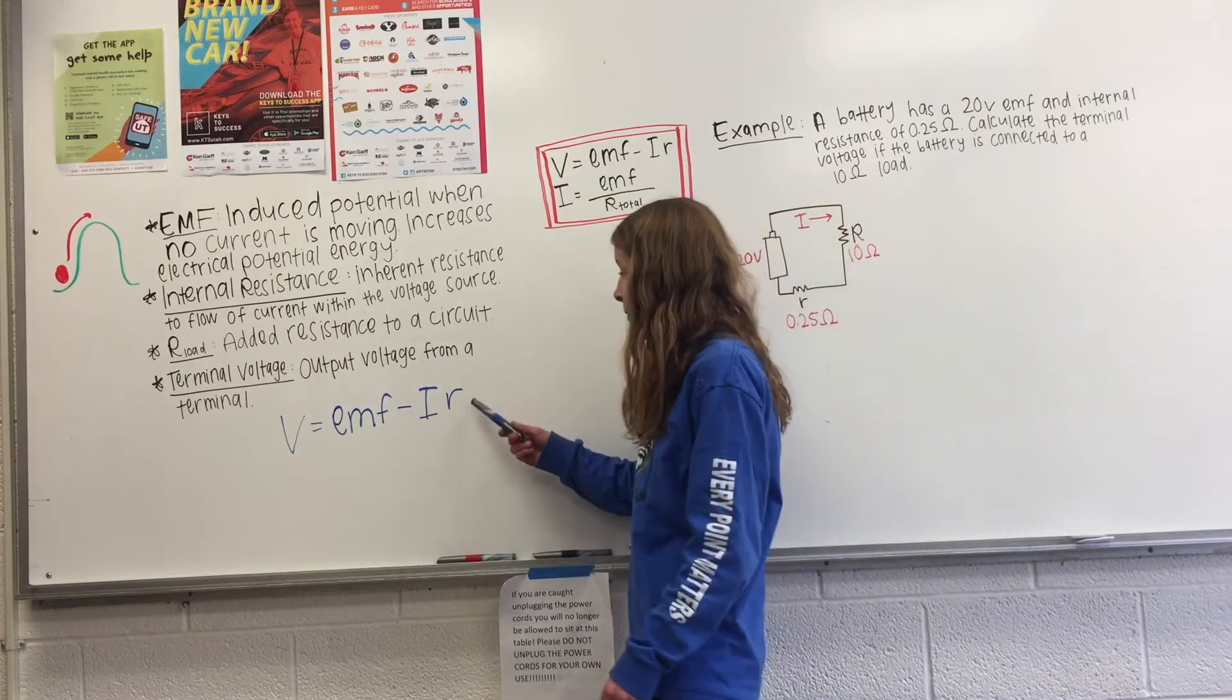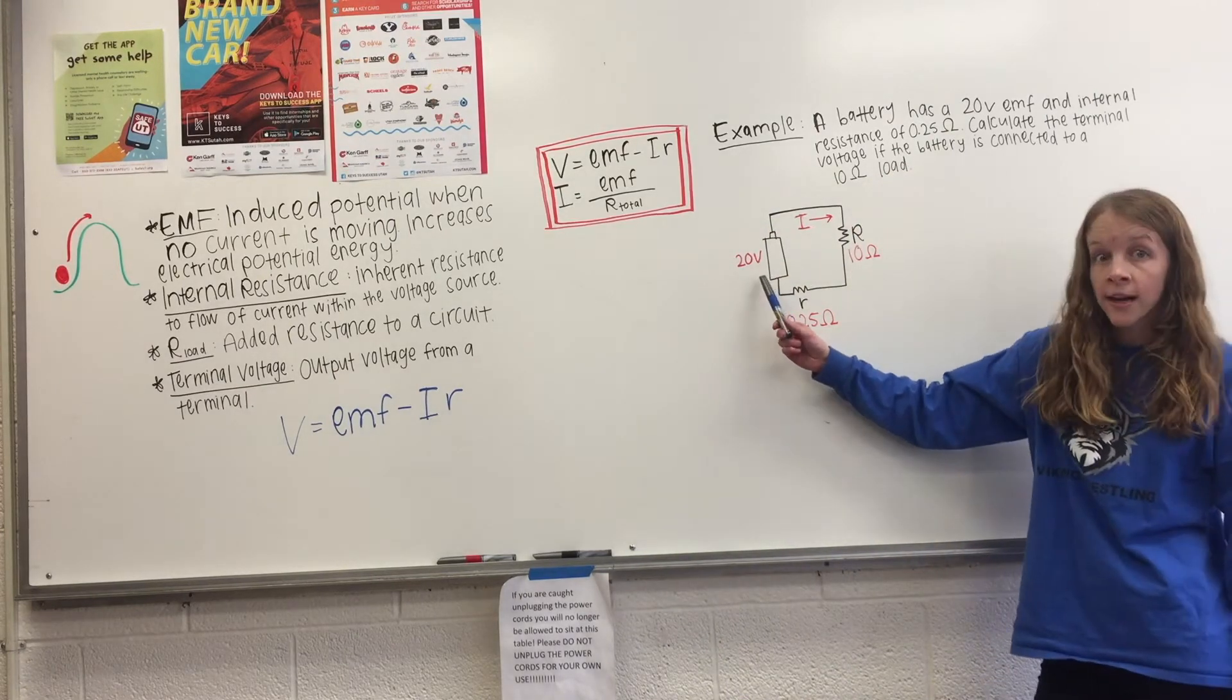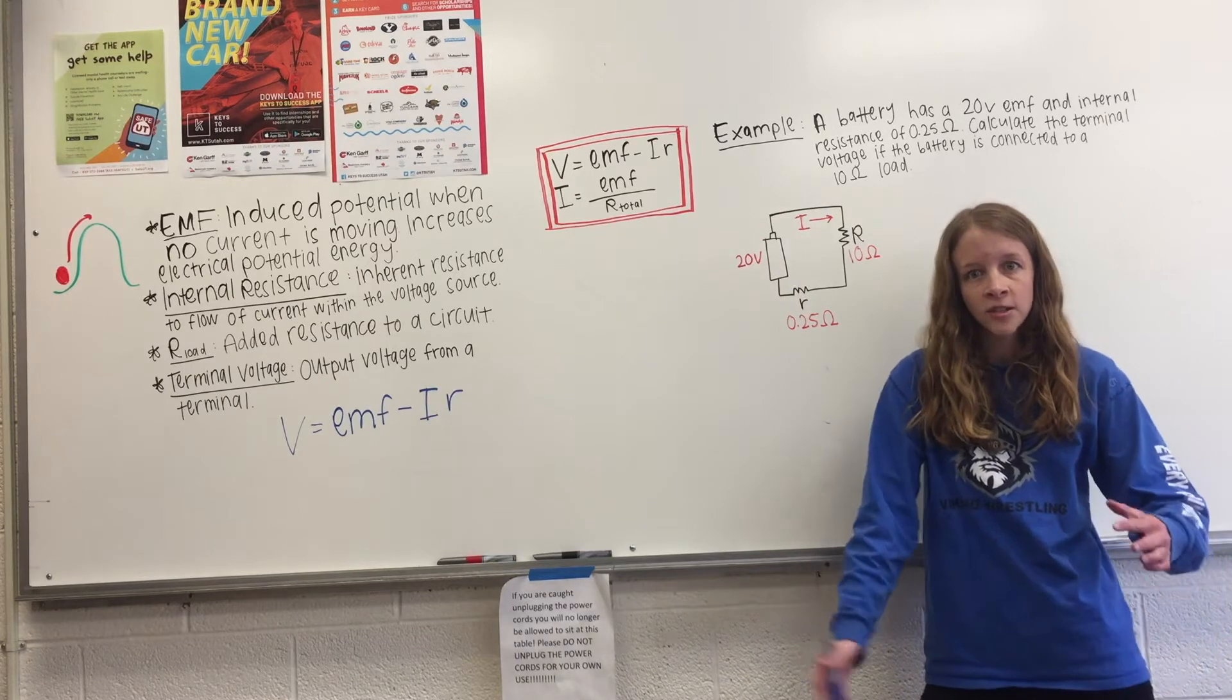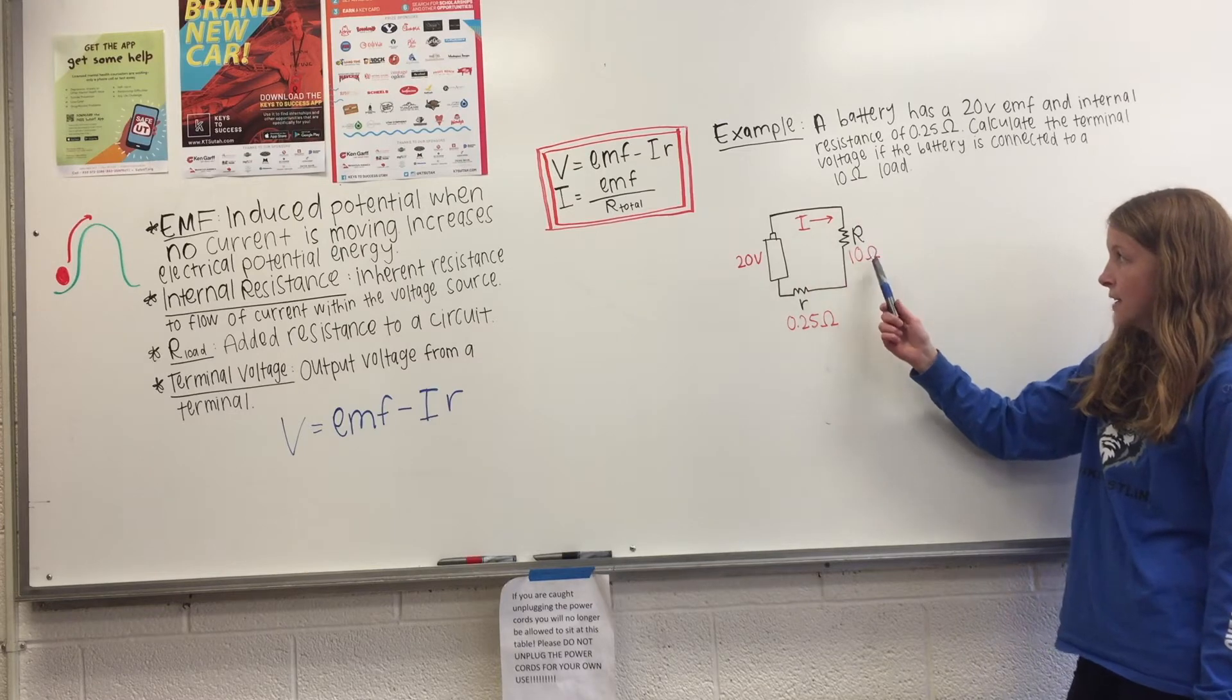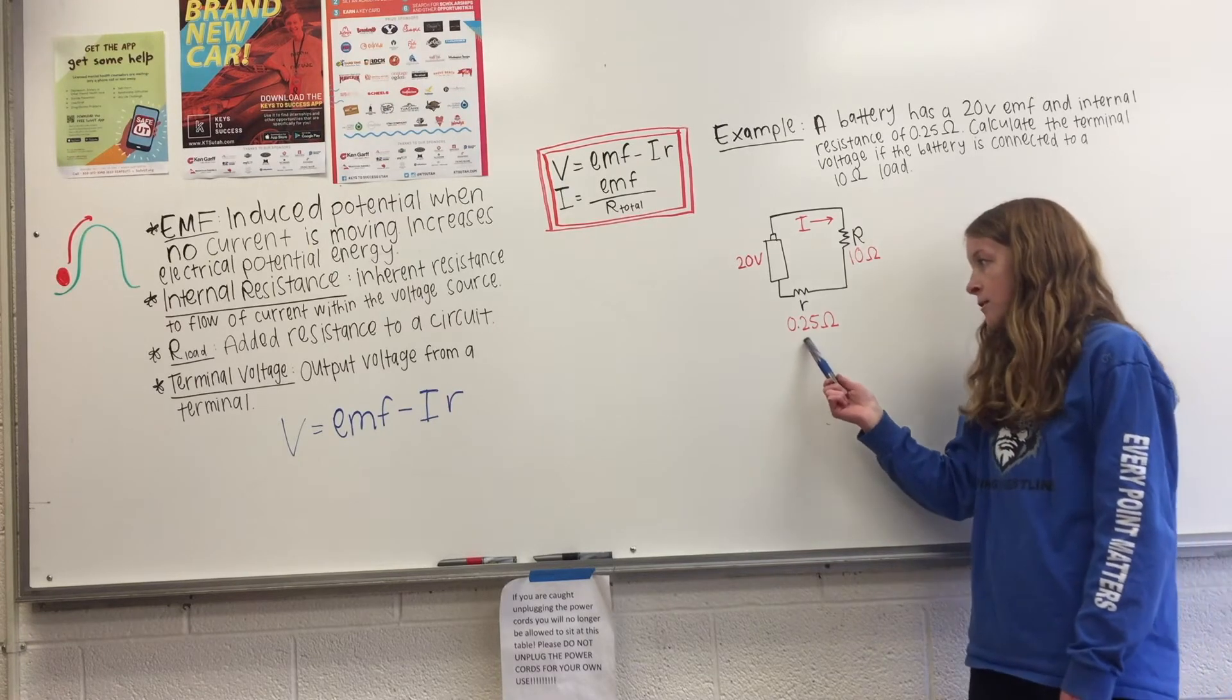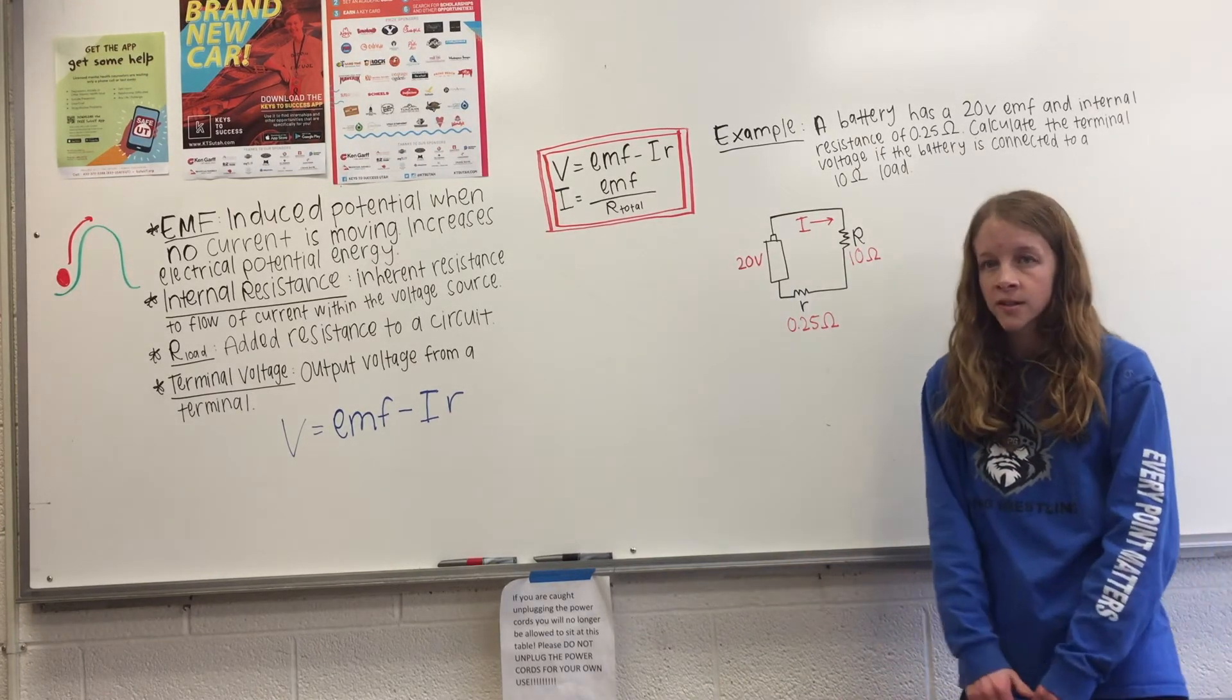Okay, and we can apply this into looking at a circuit diagram. So for example, we have this circuit diagram where we have a battery that has an EMF of 20 volts. And this is going to increase the electric potential energy of the circuit. We have our current flowing this way, and then it hits a resistor that has 10 ohms. This is an added resistor. And then we also have an internal resistance of 0.25 ohms. So we're going to do this example problem where it wants us to find the terminal voltage of the circuit.